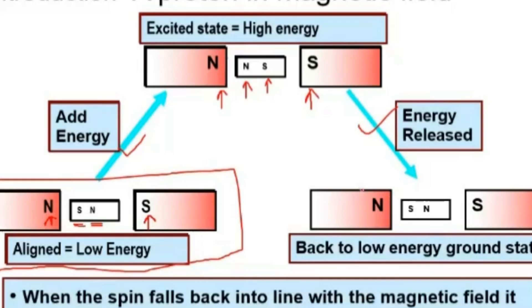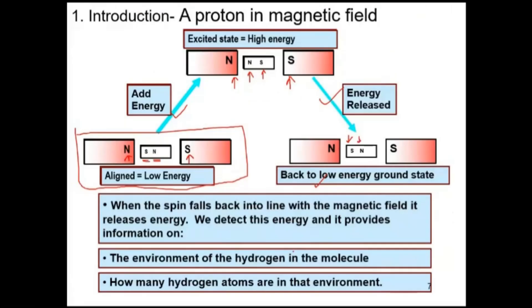Energy is then released in the form of electromagnetic radiation — radio waves — and the nucleus falls back to its ground state, with south pole facing north pole and north pole facing south pole. When the spin falls back into alignment with the magnetic field, it releases energy. Detecting this energy provides information on the environment of the hydrogen within the molecule.